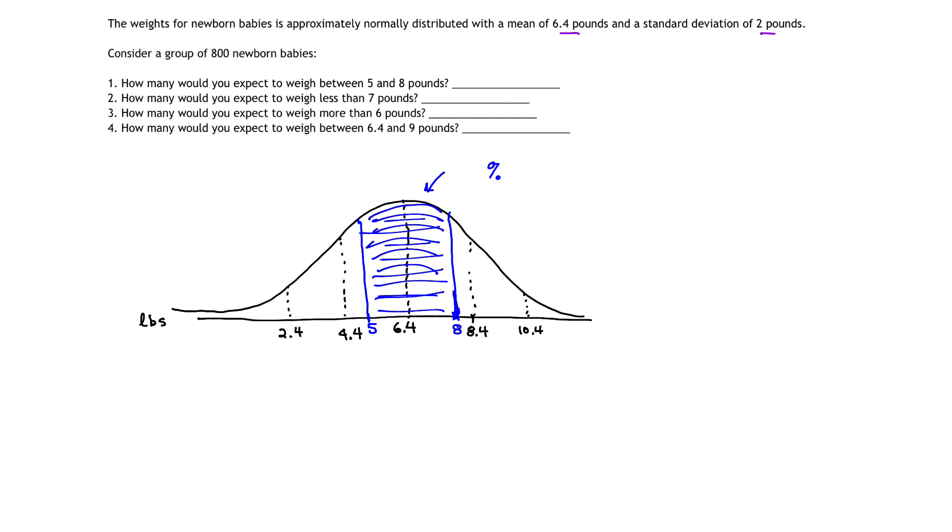So to get that probability, what do we need? We need our z-score and our z-table because the probability corresponds to the area under the curve. So we're going to need that z-table, those z-scores.